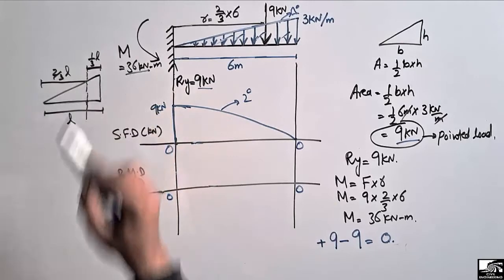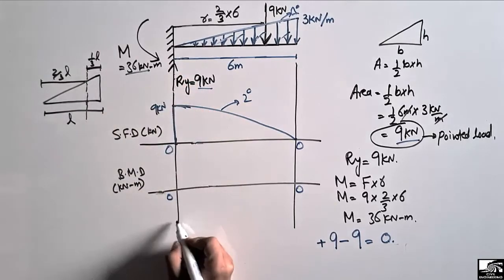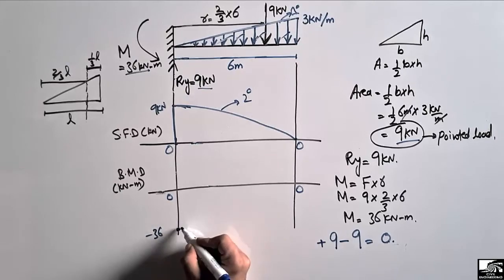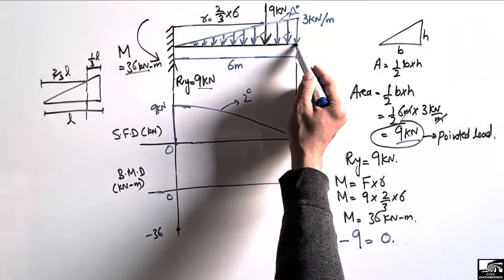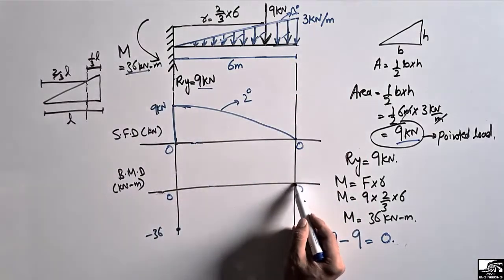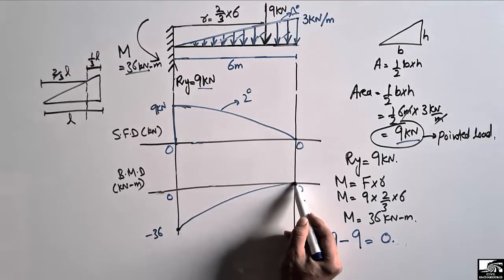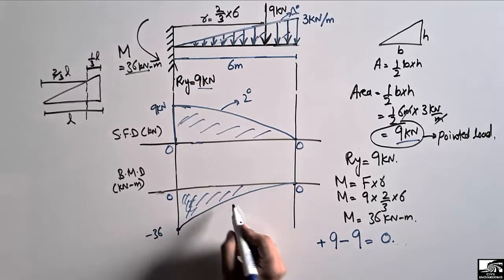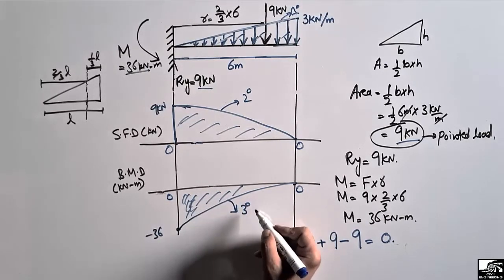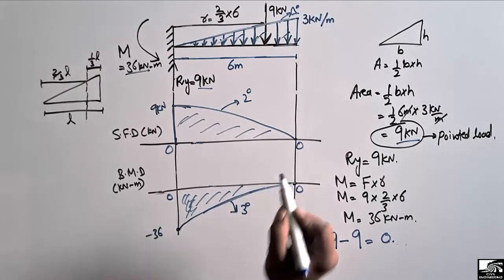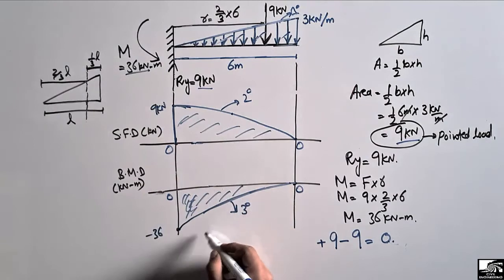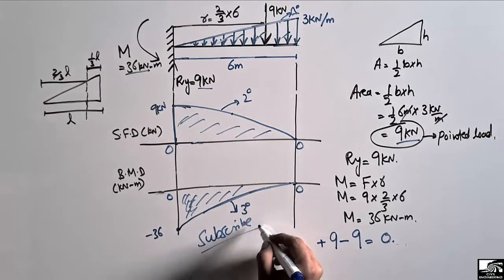For the bending moment diagram: at the fixed support the bending moment is 36 kN·m. Since this is a cantilever beam it is always a negative bending moment, so it is −36 kN·m at the fixed support. At the free end there is no support, so the bending moment is 0. Joining these two points, the bending moment diagram is a third-degree (cubic) curve, because the bending moment diagram is always one degree greater than the shear force diagram. Hope you understand — don't forget to subscribe for daily engineering videos.